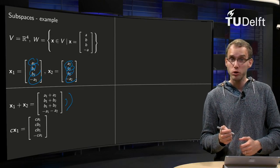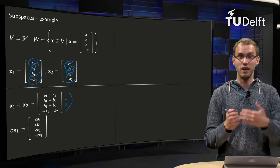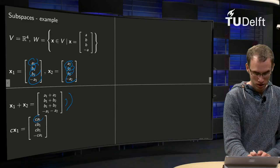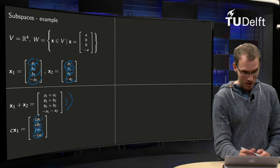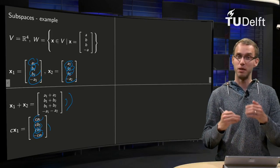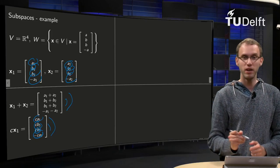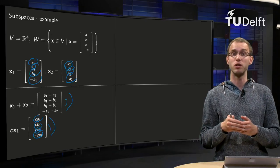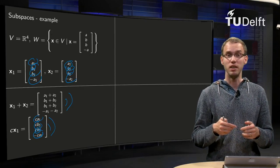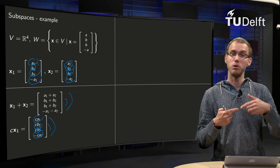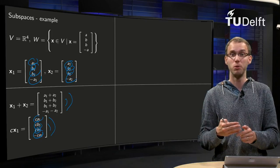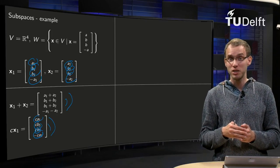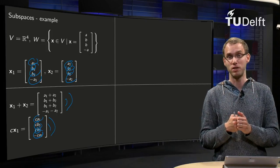What about a scalar multiple of a vector, say x1? This becomes (C·A1, C·B1, C·B1, -C·A1) — just multiply all components by C. The middle components are still the same, and the outer components are the same up to sign, so this vector is also in W. That means any sum of two vectors in W is again in W, and any scalar multiple of a vector in W is also in W, so both subspace properties are satisfied and W is a subspace of R4.